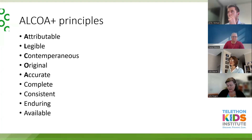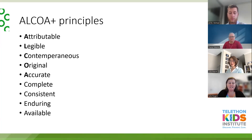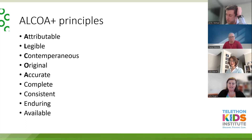The remaining principles are 'Consistent', 'Enduring', and 'Available'. Enduring and available really refers to long-term storage and being able to retrieve that data. Some studies probably have all their data stored on a CD in a warehouse somewhere — and we wouldn't be able to find a CD drive to access it. You need to consider what may happen in the future and make sure the data is future-proof.